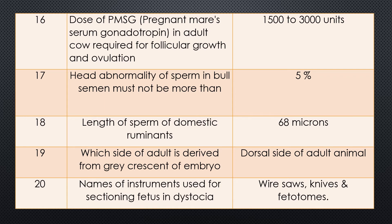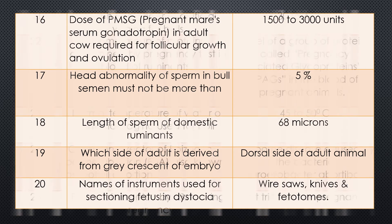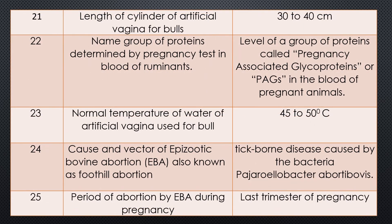Question 20. Names of instruments used for sectioning or cutting of fetus in dystocia? Answer: wire saws, nails, and specialized fetotomes are used for sectioning of the fetus in dystocia. Question 21. Length of cylinder of artificial vagina for bulls? Answer: 30 to 40 cm length.